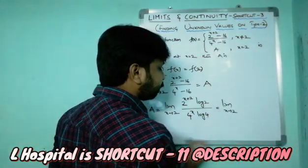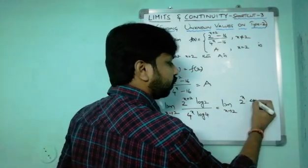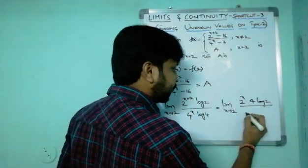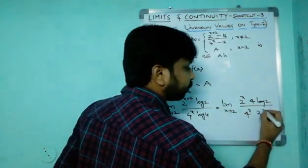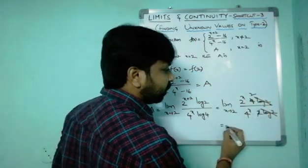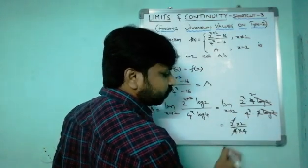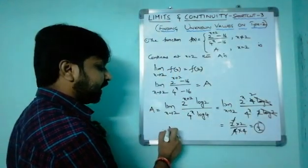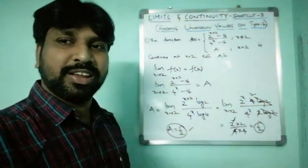After differentiation: limit x→2 of [2^x · 4 · log2] / [4^x · log4]. Since log4 = log2² = 2log2, the log2 terms cancel. Substituting x = 2: (4 · 4) / (16 · 2) = 16/32 = 1/2. Therefore a equals 1/2.